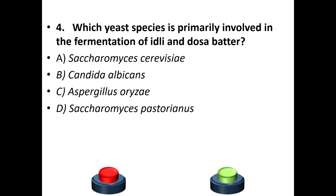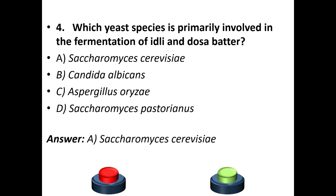Fourth question: which yeast species is primarily involved in the fermentation of idli and dosa batter? A: Saccharomyces cerevisiae. B: Candida albicans. C: Aspergillus oryzae. D: Saccharomyces pastorianus. Your answer is option A — Saccharomyces cerevisiae.